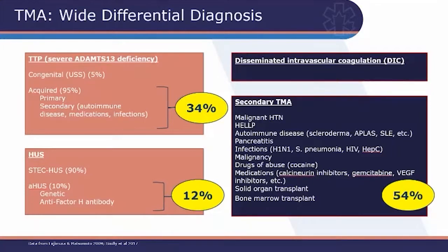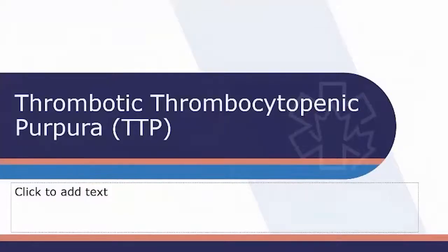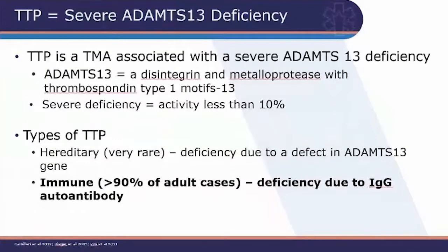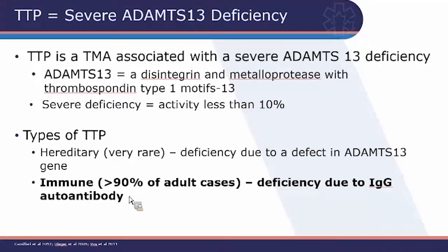The number one priority in the ER is to identify TTP and refer it appropriately. TTP is so important to identify and treat right away because without treatment it is deadly in the overwhelming majority of cases — about 85 percent mortality — whereas with treatment you can reduce mortality to down to 15 percent. TTP is a type of thrombotic microangiopathy marked by severe ADAMTS13 deficiency. ADAMTS13 is a protein whose job is to cleave von Willebrand factor, and when its activity falls below 10 percent, that's when TTP happens.